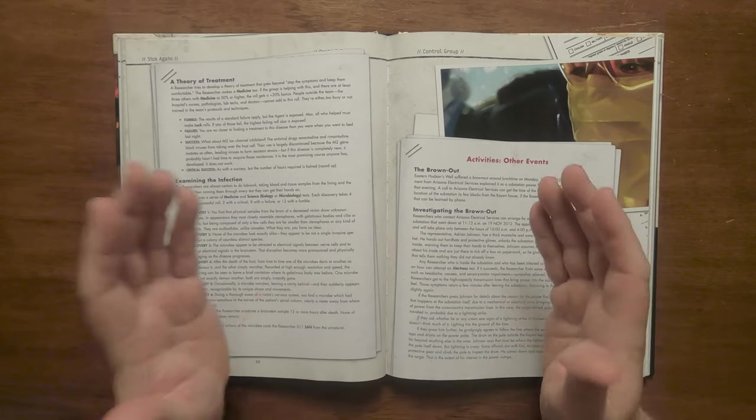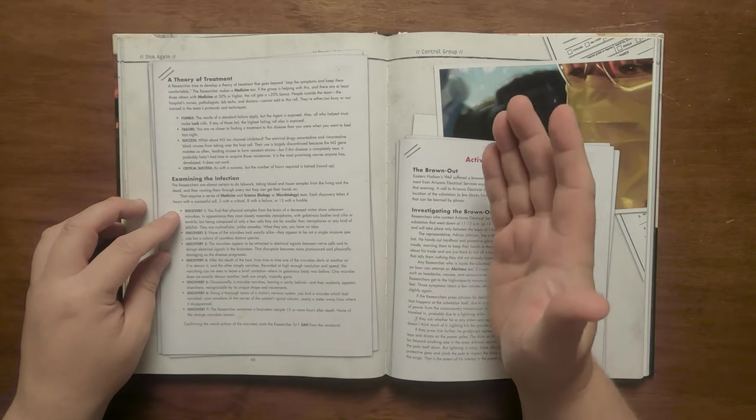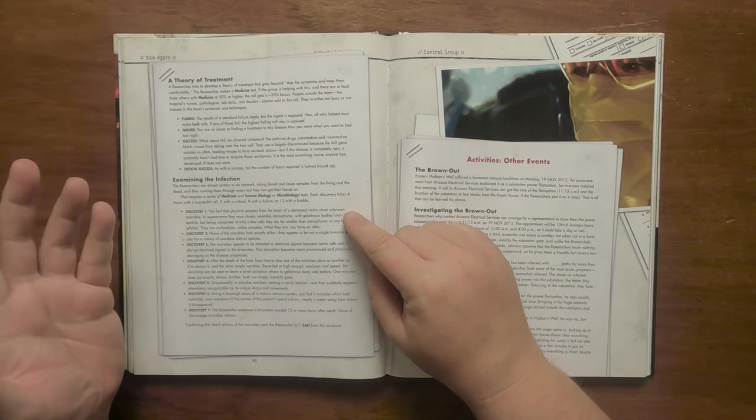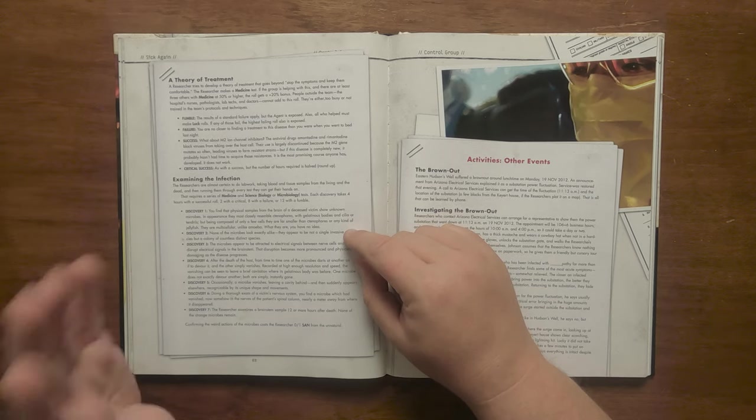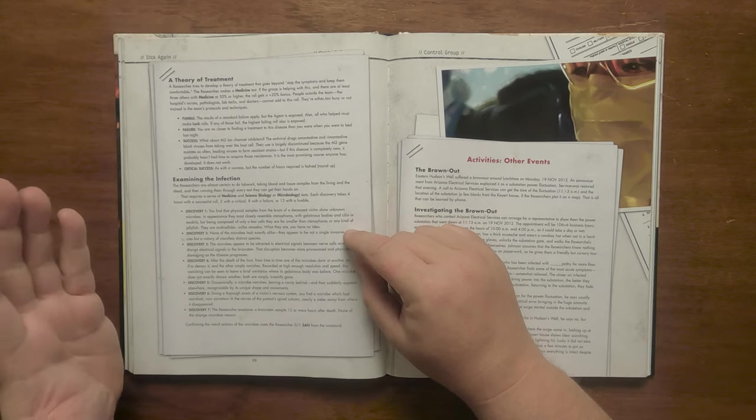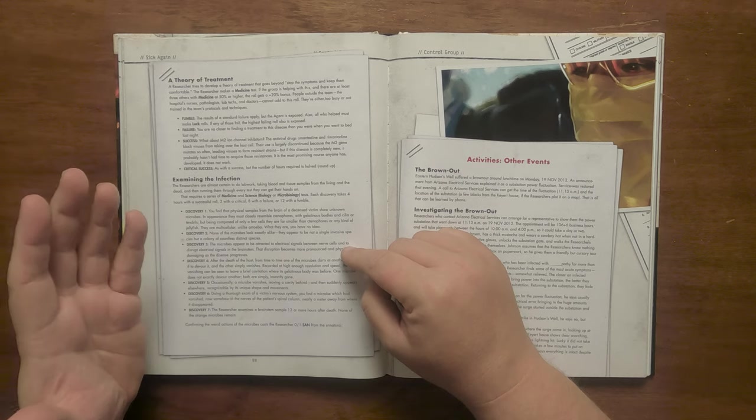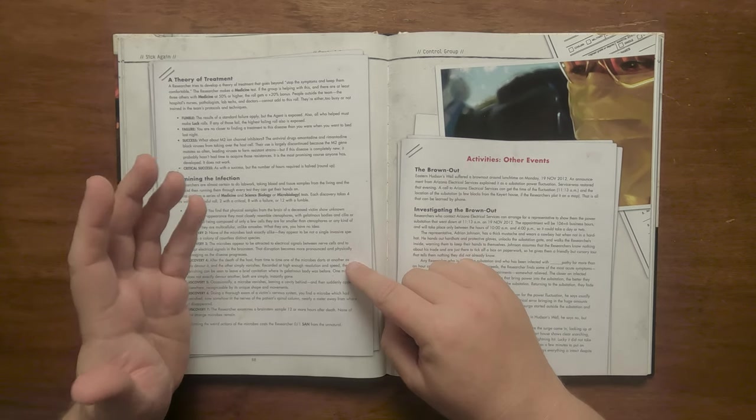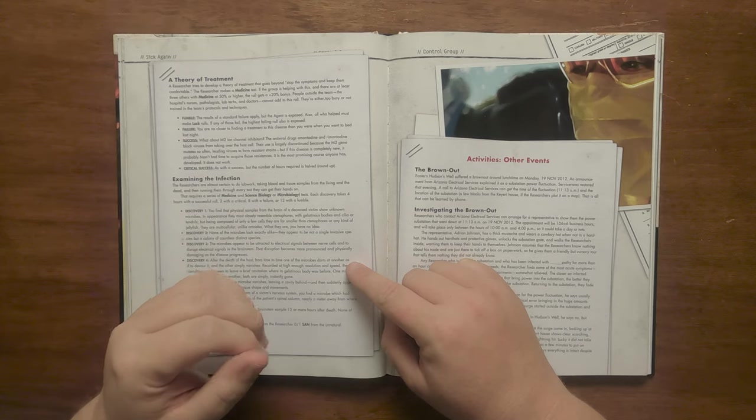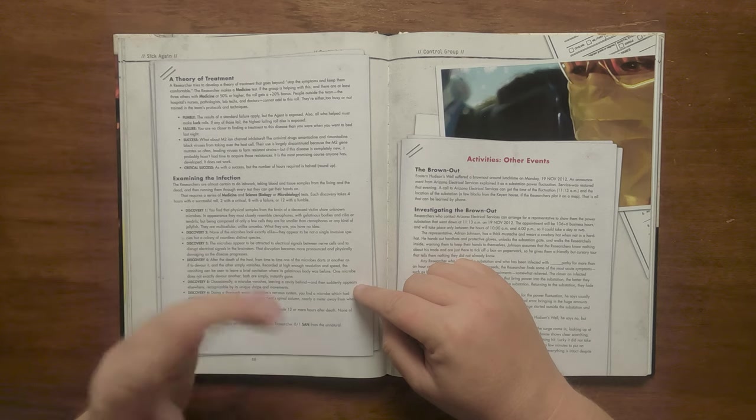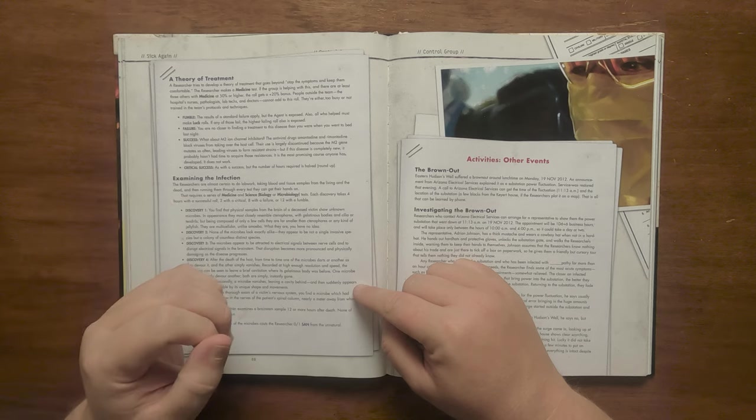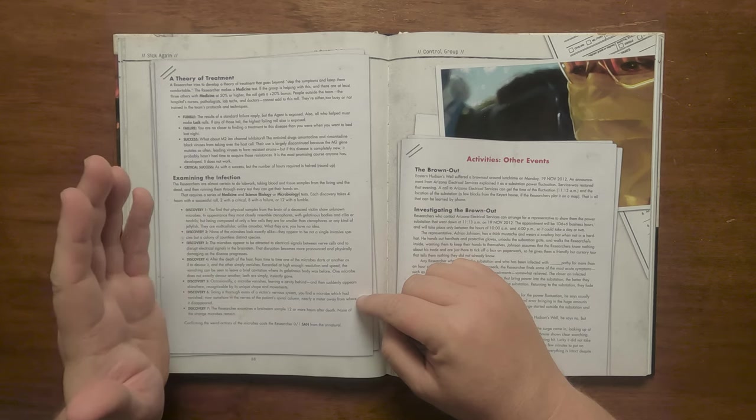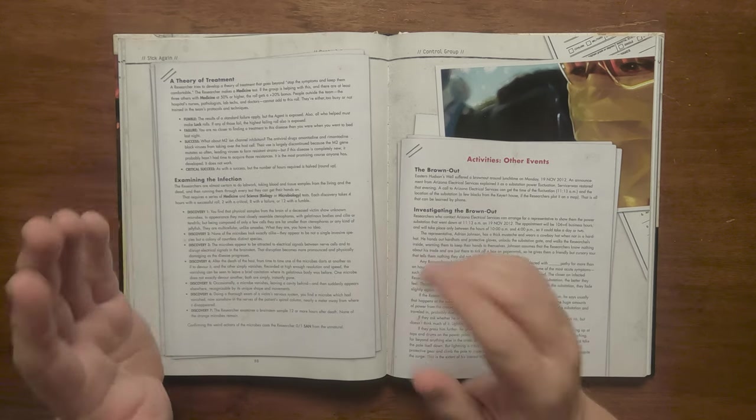Should they choose to examine the infection, they can learn a great deal. There are seven discoveries which can be made, with each taking four hours, two with a critical, eight with a failure, and twelve with a fumble. The first is unknown microbes in the brain tissue of deceased victims. The second is that none of these microbes look exactly alike, resembling more of a colony of different distinct species. The third is that these microbes seem to be attracted to electrical signals and can disrupt these signals in the brain stem. This worsens as the disease progresses. The fourth is that after the host dies, occasionally the microbes will dart at each other to devour it, but the other will vanish out of existence. The fifth is that sometimes a microbe will vanish and leave a cavity behind and then reappear somewhere else, recognisable as the same one due to their uniqueness. The sixth is that if the nervous system is thoroughly examined, a microbe will vanish and then reappear a metre away from where it disappeared. The seventh and final discovery can determine that in the brain stem of a victim 12 hours after death, none of the microbes remain.